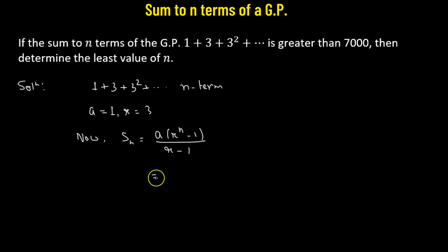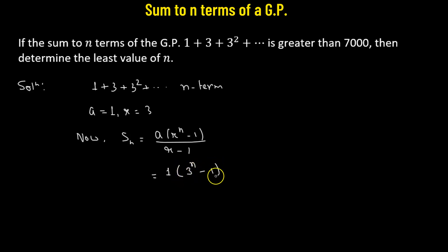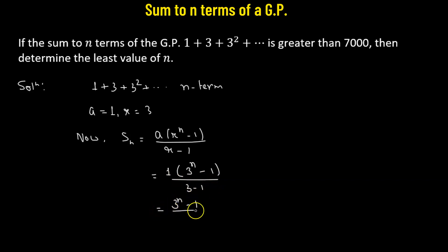Substituting our values, the first term is 1 multiplied by (3 raised to the power n minus 1) divided by (3 minus 1), which gives us (3 raised to the power n minus 1) divided by 2. This is the sum to n terms of our given geometric progression.